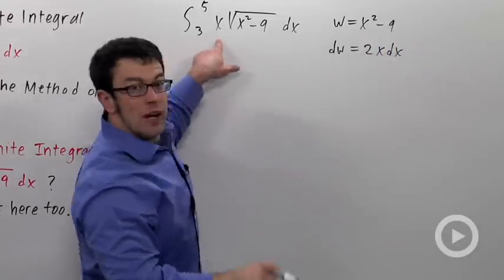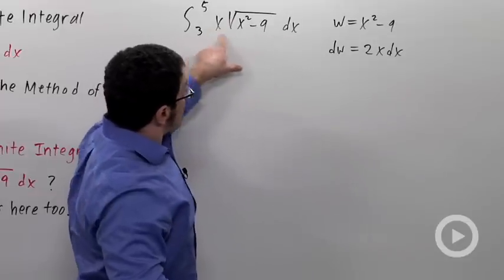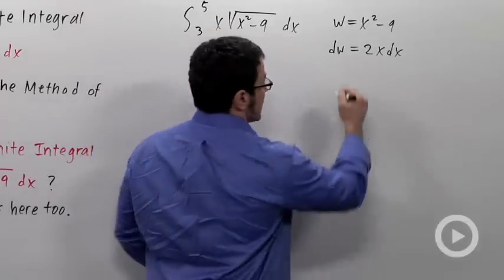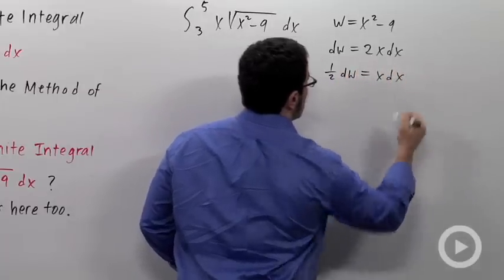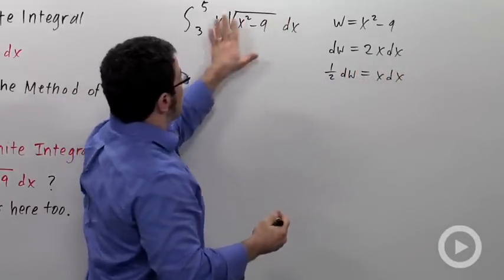Now I don't have a 2x dx, but I do have an x dx. So I can just divide both sides by 2 and get 1 half dw equals x dx. That'll take care of everything inside the integral.